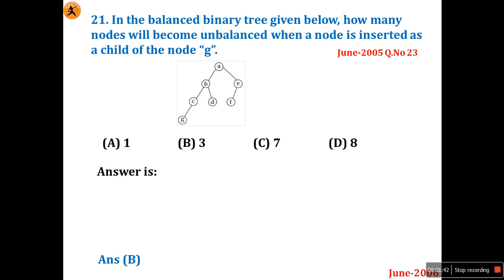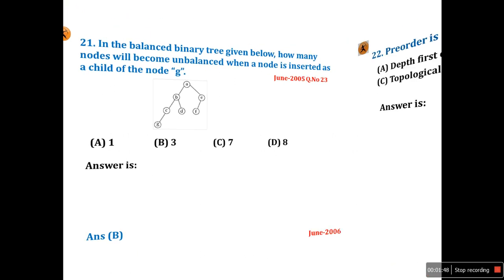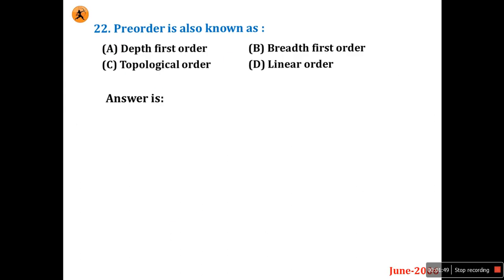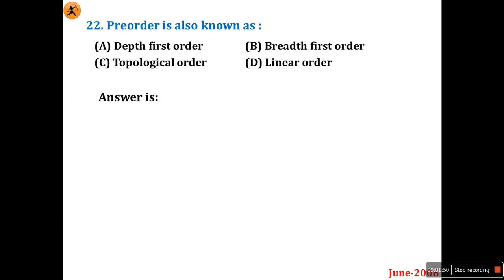I will not explain that again — just go through it. Question number 22: pre-order is also known as — depth first order, breadth first order, topological order, or linear order?